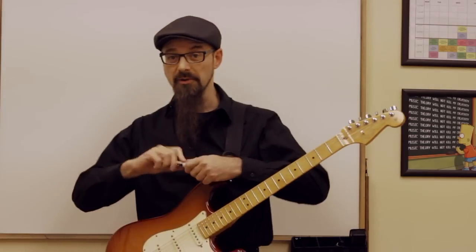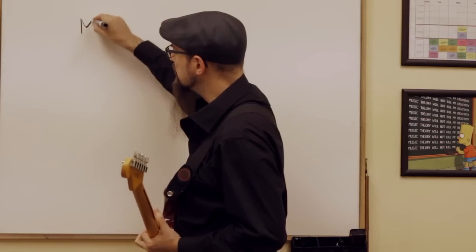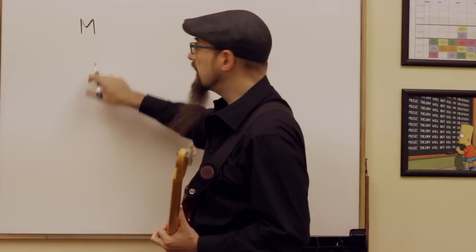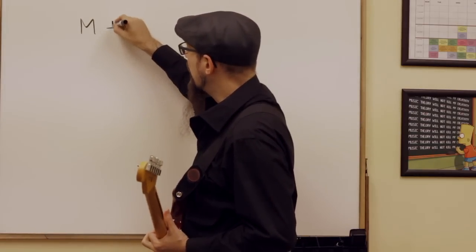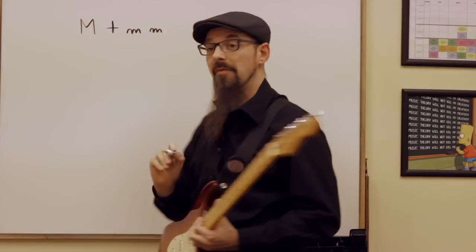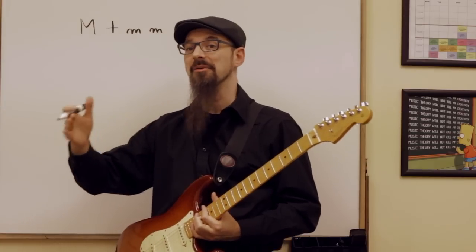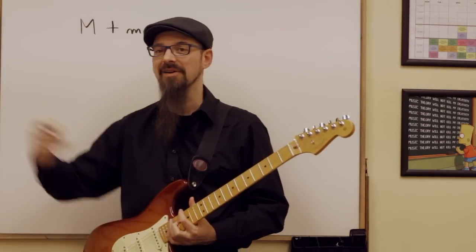Then I'm giving myself two sequences to follow. The first sequence is the quality of the chord — I'm always going to play chords in this order: first a major chord, then an augmented chord, then a minor chord, and then another minor chord. So everything I'm playing is major, augmented, minor, minor, major, augmented, minor, minor, and so on and so forth.